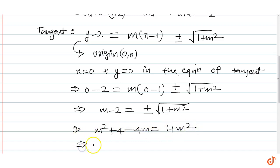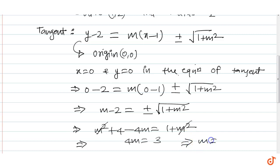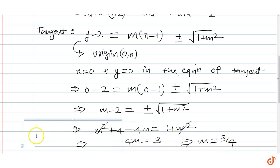और इसको फर्दर solve करे तो m² से m² cancel कर दे, तो 4 - 4m = 1, which gives 4m = 3, which gives m = 3/4. Hence the slope of the tangent passing through origin to this circle is 3/4.